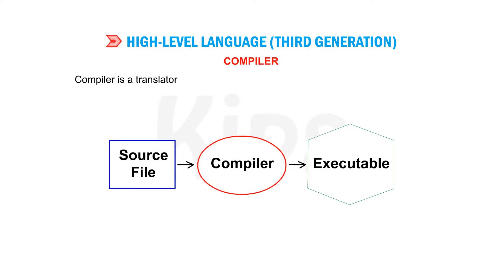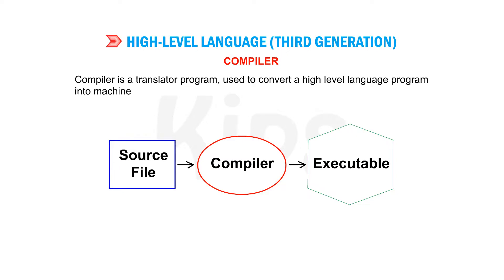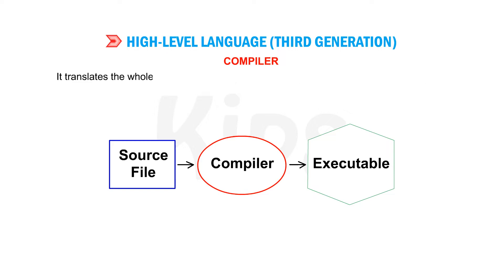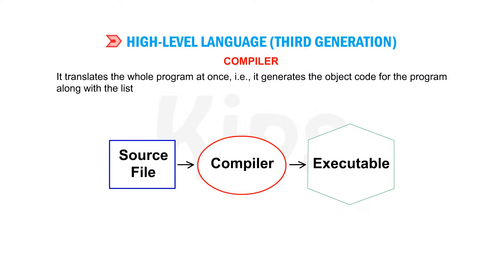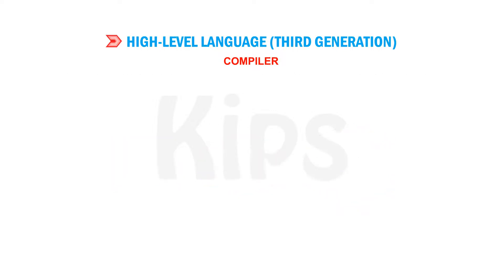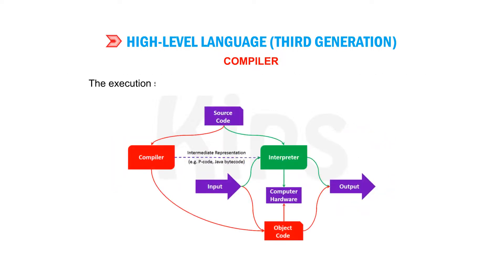A compiler is a translator program used to convert a high-level language program into machine language. It translates the whole program at once, generating the object code for the program along with the list of errors. The execution speed of a compiler is faster as compared to an interpreter.